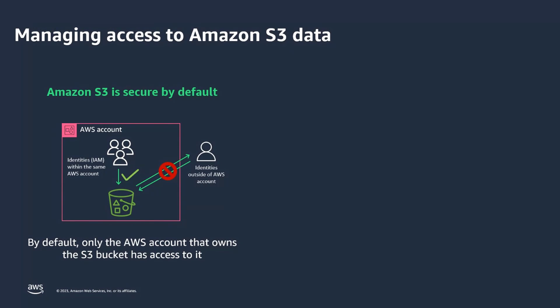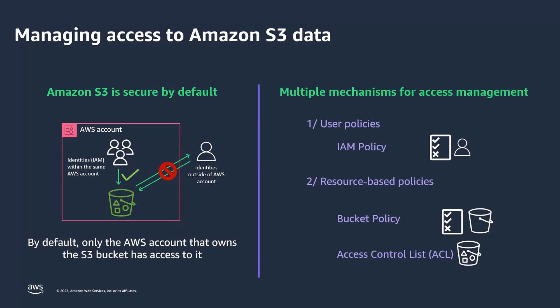Amazon S3 stores data as objects in S3 buckets. By default, only the resource owner can access these resources. That means the AWS account that you use to create a bucket and upload objects owns that particular bucket. A bucket owner can grant cross-account permissions to another AWS account to upload objects. In this case, the AWS account that uploads objects may own those objects.